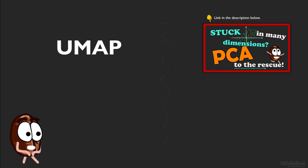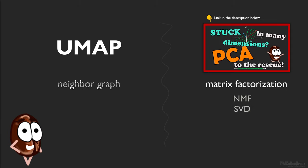PCA and UMAP are very different. PCA factorizes a matrix characterizing the data, which puts it into company with algorithms like NMF or SVD. But UMAP, like t-SNE if you know it, builds a neighbor graph in the original space of the data and tries to find a similar graph in lower dimensions.